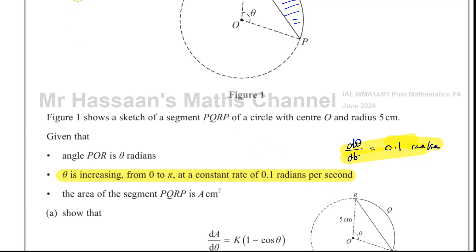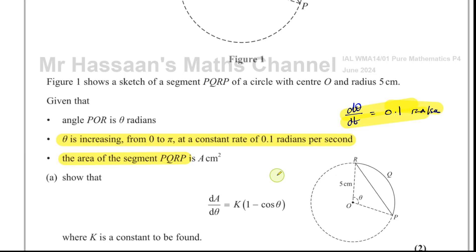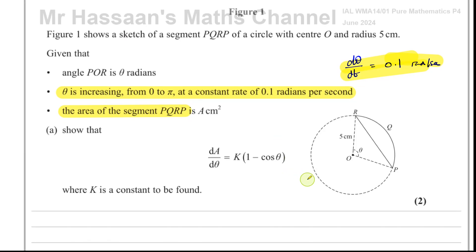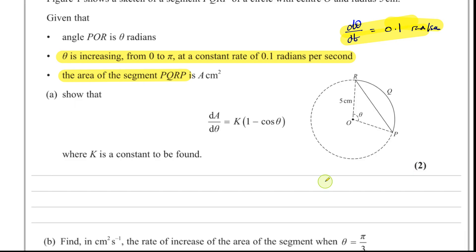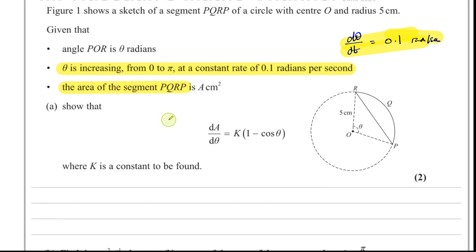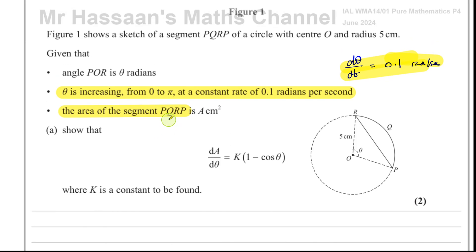Then it says the area of the segment PQRP, the segment, not the sector, the segment, the area of the segment PQRP is A centimeter squared. We've got to show that dA/dθ is k times 1 minus cosine theta, where k is a constant to be found. How do we deal with a question like this?